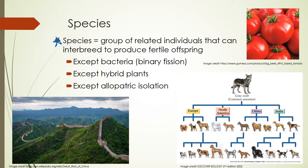We can define a species as a group of related individuals that can interbreed to produce fertile offspring. There are some limitations to this definition. Bacteria don't really interbreed — they reproduce via binary fission, so it's hard to talk about species of bacteria. We also have hybrid plants, like these tomatoes, where we combine different species and sometimes end up with offspring that can reproduce. Then we have allopatric isolation, where organisms here and organisms there might be able to interbreed if they could get past a physical barrier like the Great Wall of China, but they can't because that barrier is in the way.